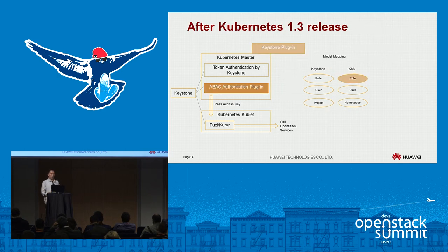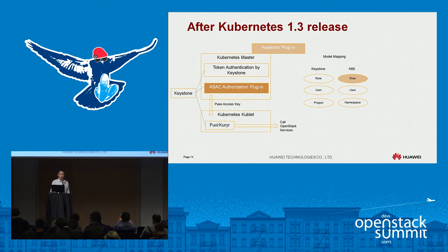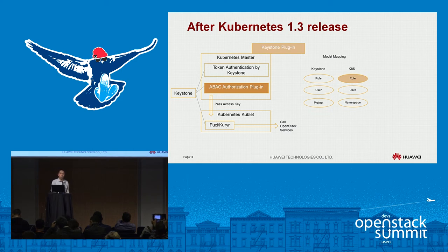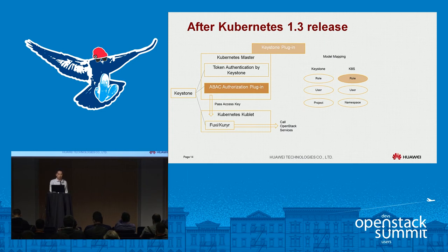In the Kubernetes 1.3 release, the official Keystone plugin was still under development but released. We found authentication with Keystone worked via the plugin, but authorization was still lacking. Since we picked Kubernetes for its plugin mechanism, we wrote our own ABAC authorization plugin. With this plugin, we pass the access key to Kubernetes so Kuryr can use it to talk to Neutron and Fuxi, and then on to Cinder. Also, Kubernetes 1.3 introduced roles natively, so we no longer need the awkward group-to-role mapping — it's a clean role-to-role match.